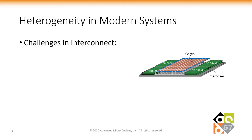Heterogeneity in modern systems is growing by the day. Take the example of recent advances in die stacking and 2.5D chip integration technologies. These introduce in-package network heterogeneities that complicate the interconnect design. Even a simple 2.5D processor could bring in many forms of heterogeneities.